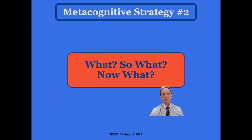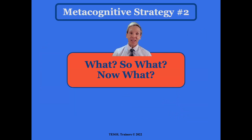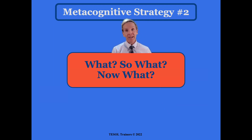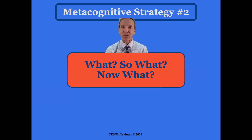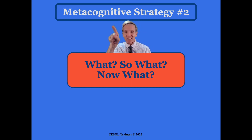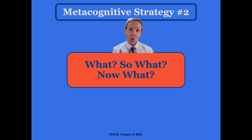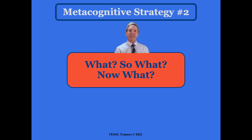Metacognitive strategy number two is the What, So What, Now What. This comes from David Kolb's experiential learning cycle — those four stages that everybody goes through when they learn anything. The What, So What, Now What is a strategy that can be used at any given point.